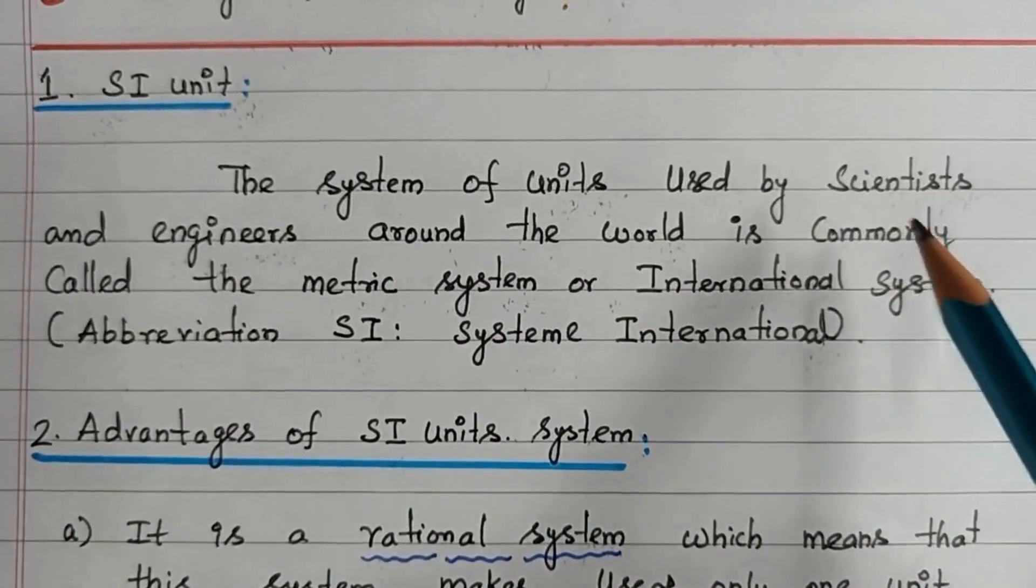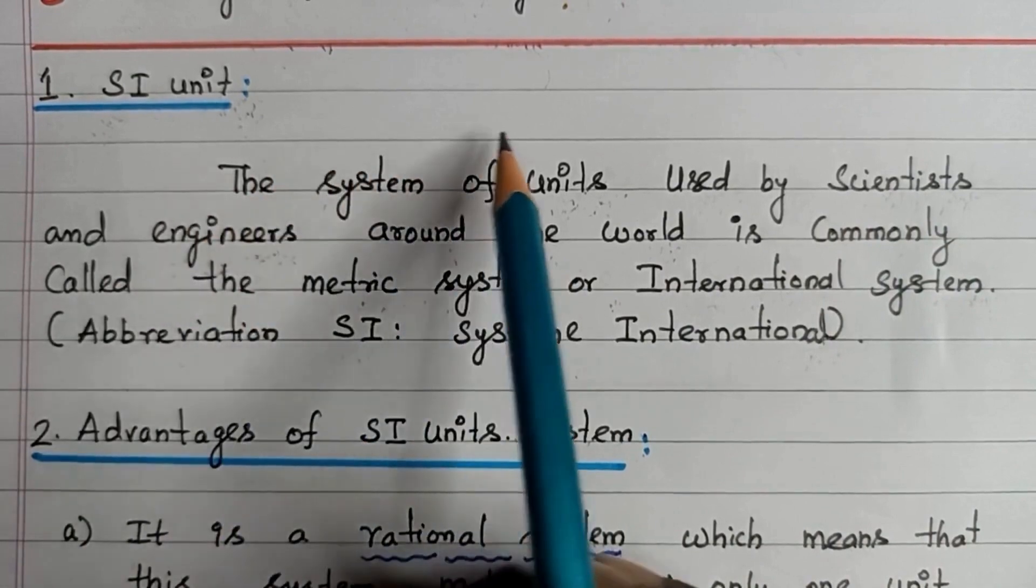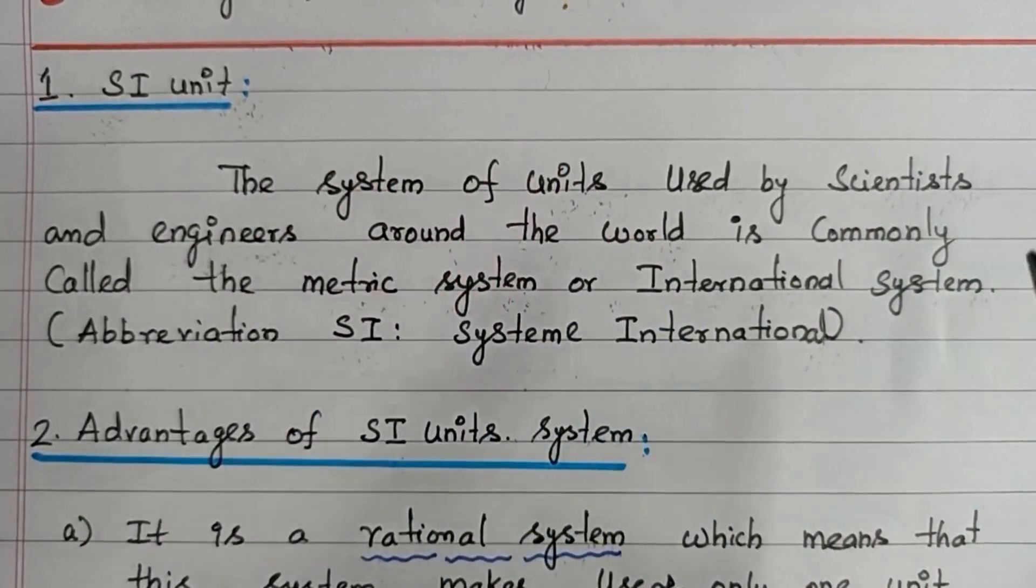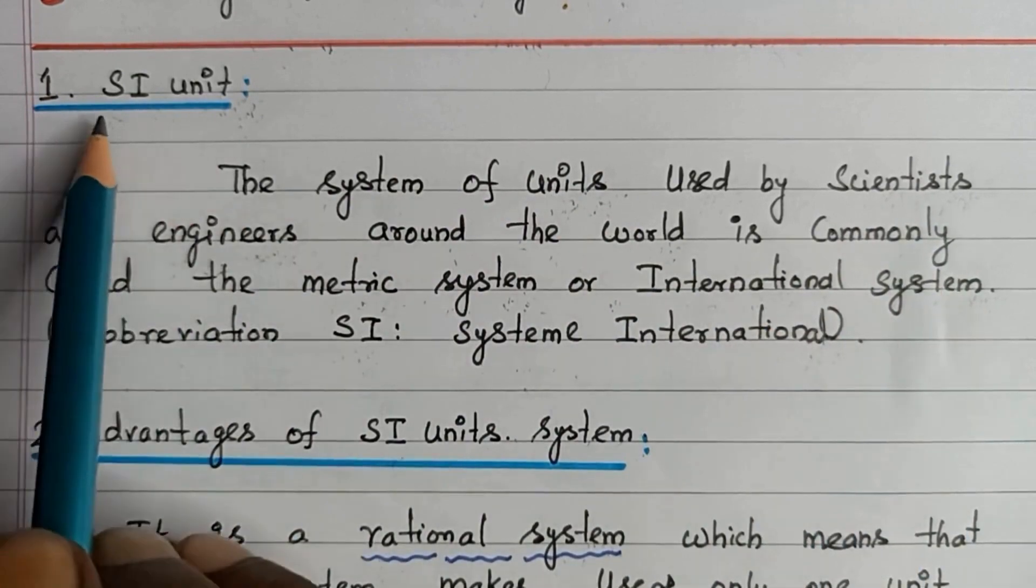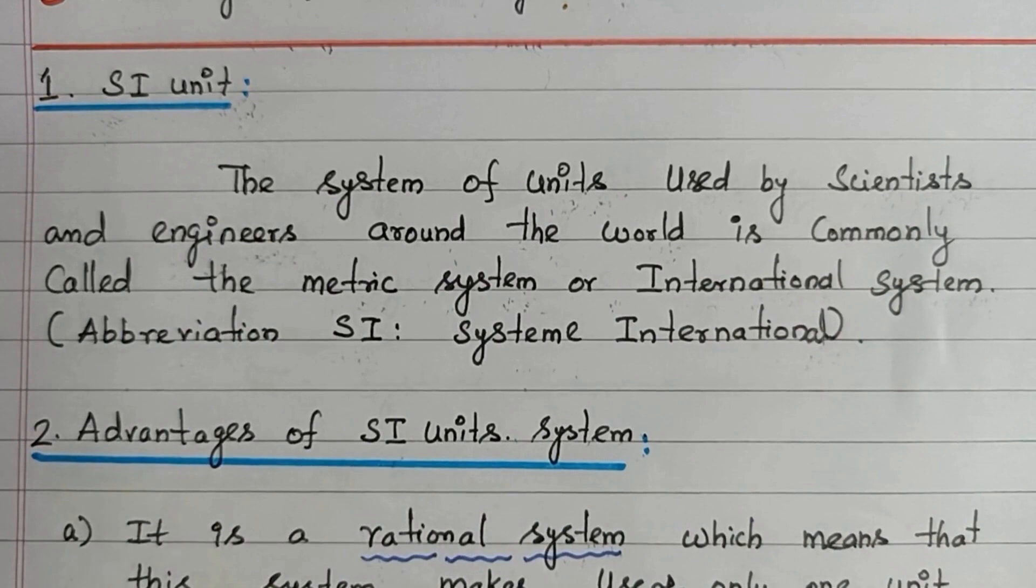Now, the scientists and engineers around the world are commonly using a particular system of unit. This particular system of unit is called International System or SI System because previously in different parts of the world, different systems of units were used.